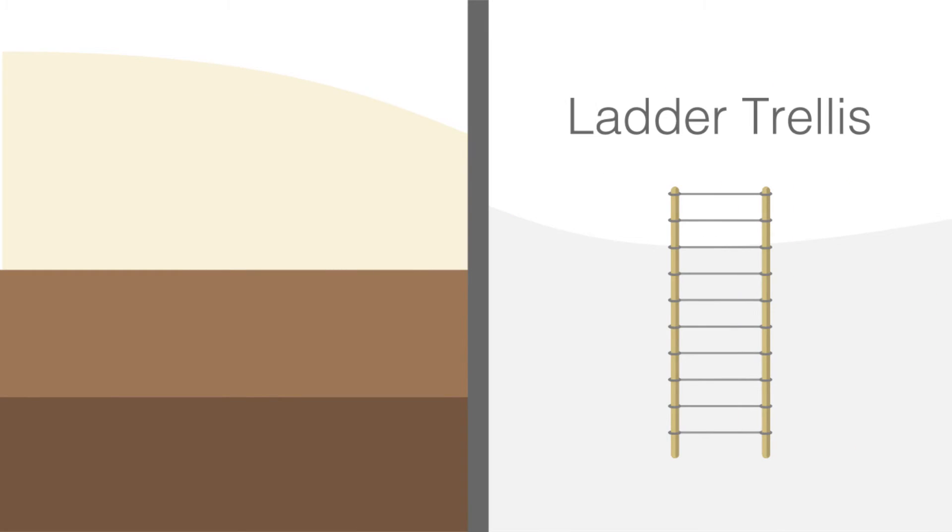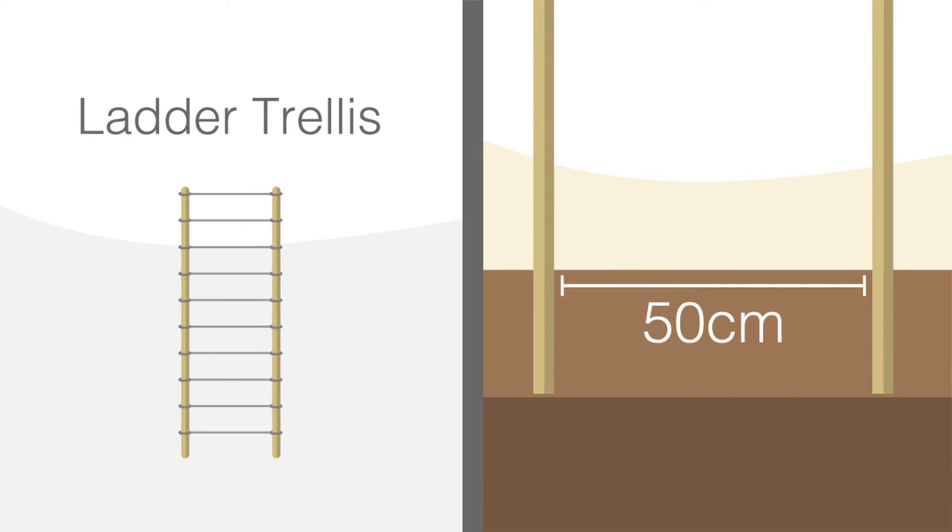For a ladder trellis, stake two one to one and a half meter sticks or poles in the soil about fifty centimeters apart, with one or two plants growing in between the sticks. Ensure the sticks are sturdy in the ground.